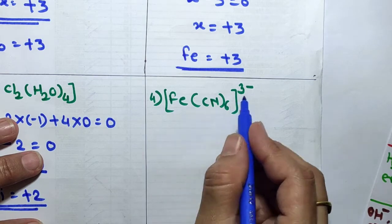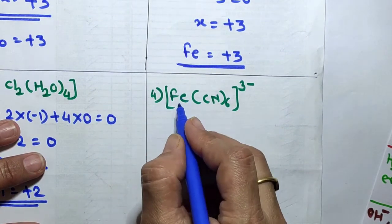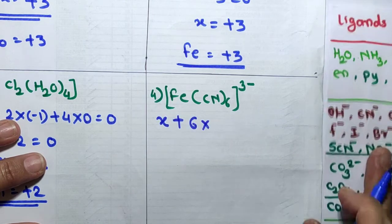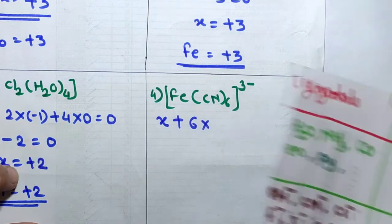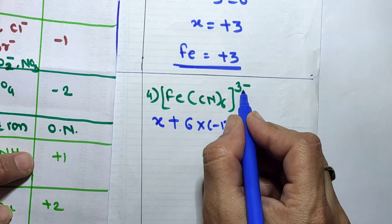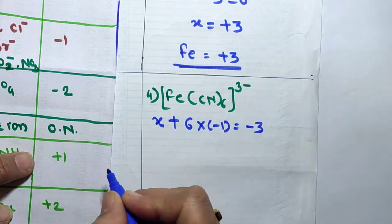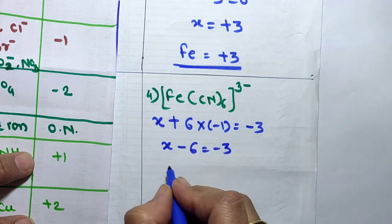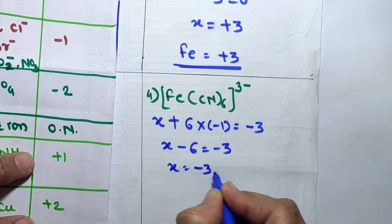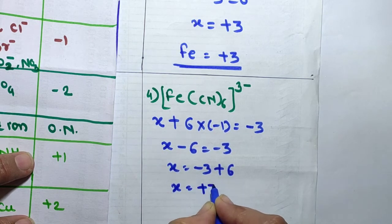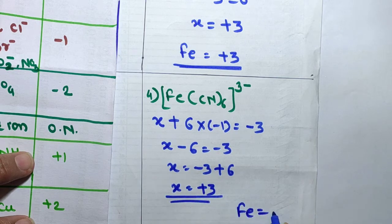Fourth example: [Fe(CN)6]³⁻. Central atom is Fe with oxidation state X. CN⁻ has oxidation number −1. So: X + 6×(−1) = −3. That is X − 6 = −3, therefore X = −3 + 6 = +3. Iron has oxidation state +3 in this complex.